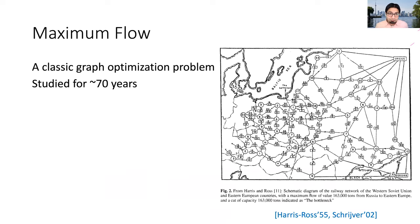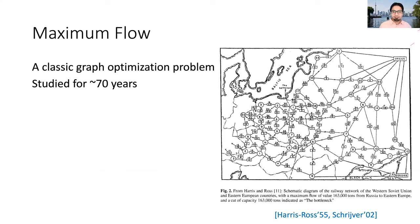We're working on the classic problem of maximum flow. Hopefully all of us have heard about it. It's a problem that goes back almost 70 years. Here, for example, is a diagram from 1955 where Harris and Ross were formalizing the capacity of the Soviet Union's railway network by trying to formulate it as a flow question. So it's a classic graph optimization problem. We've been studying it for 70 years, but for a long time it was not obvious how quickly you can do it — can you do it in almost linear time?